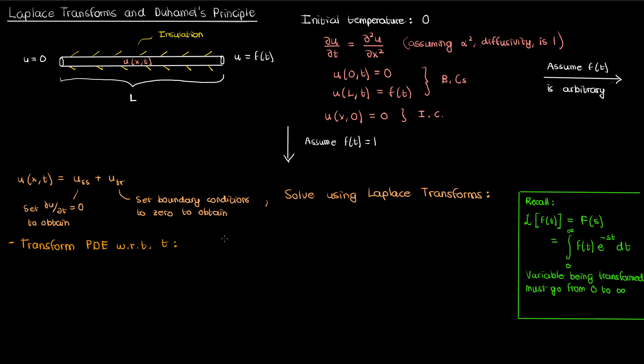So if we take the Laplace transform of this PDE with respect to time, we end up with S times capital U minus u at t equals zero equals the second ordinary derivative of capital U with respect to x. I've used the subscript SMP on capital U to denote that we're solving a simpler version by setting a constant boundary condition. The boundary conditions would then get transformed to U sub SMP at x equals zero equals zero and U sub SMP at x equals L equals 1 over S. We can get rid of the U at t equals zero term because that's zero according to our initial condition.